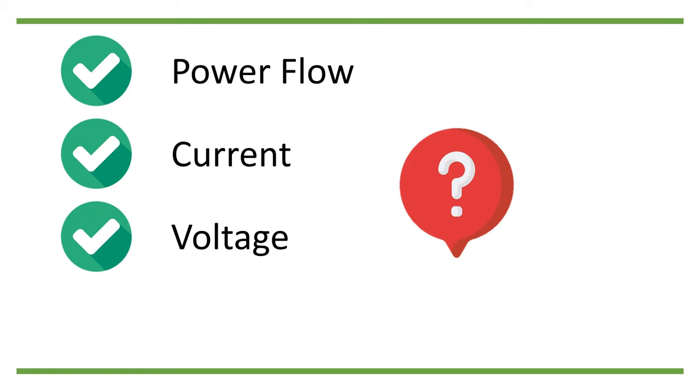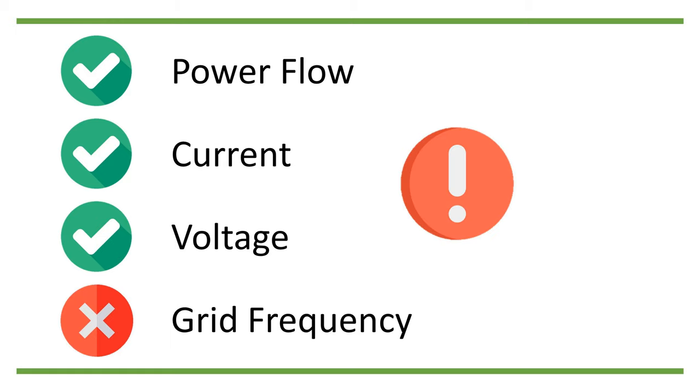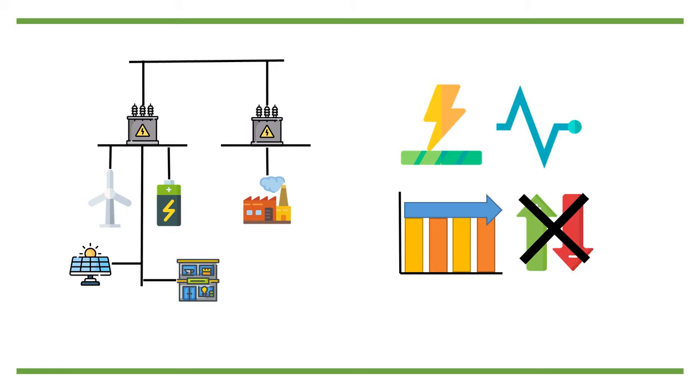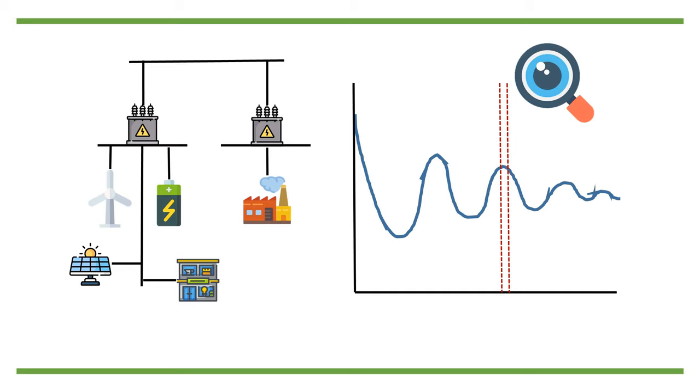However, you probably noticed that something is missing. Grid frequency was not mentioned here. This is because we usually assume the power system is at a fixed stationary point when conducting power flow analysis. So grid frequency does not change at all under this assumption, and it is thus a static analysis of a time slot of the power system.